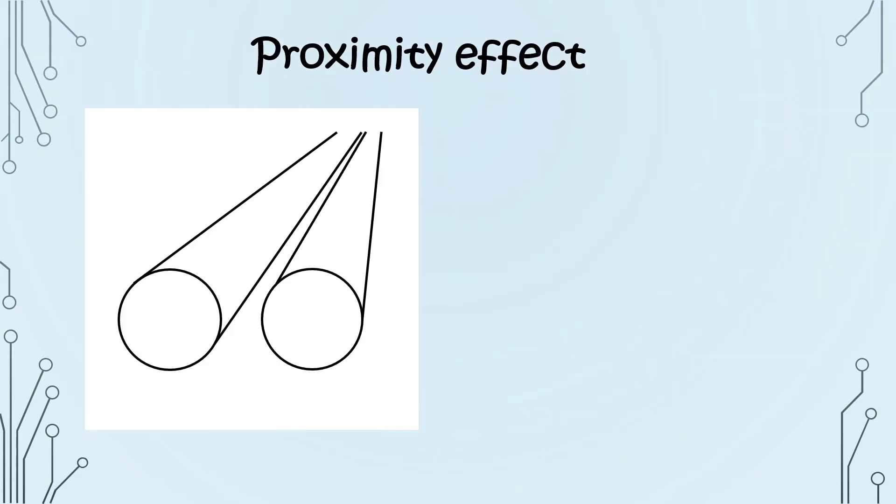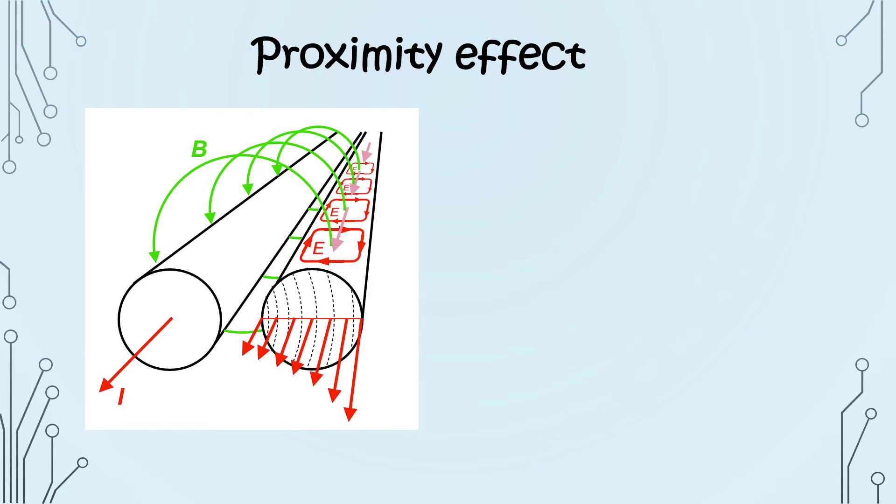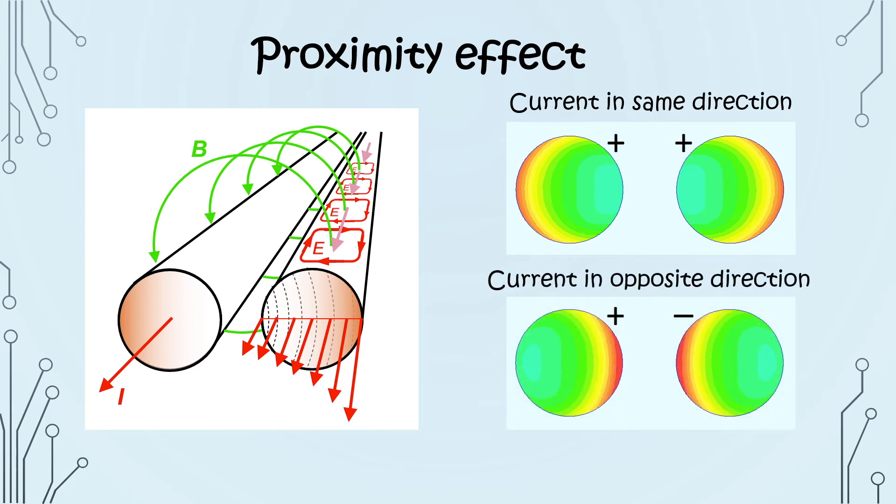The theory behind the proximity effect is the same as that of the skin effect. The magnetic field generated from an AC current does not only influence the current within the wire itself. It can also interact with neighboring wires if they are too close together. Eddy current will be generated in the neighboring wire, causing a distribution of current inside it. If the currents of the two wires are in the same direction, the proximity effect will push the current away from each other in the wires. If the currents are in opposite direction, then only the areas closest to the wires conduct electricity. Overall, the proximity effect further reduces the effective cross-sectional area of the wires used for conducting current, and therefore increases resistance.